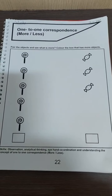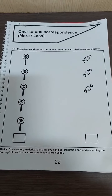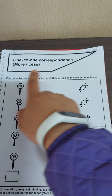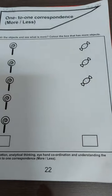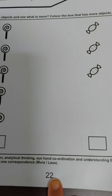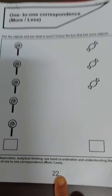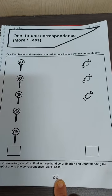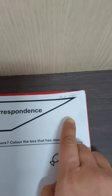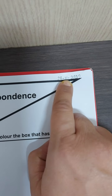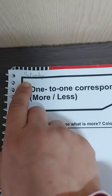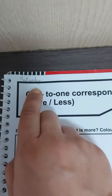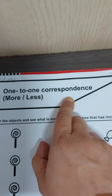Good morning children. As we have all learnt one-to-one correspondence more or less, ask your parents to take out page number 22 of your maths activity book. Ask them to put the date 28-11-2020, day Saturday. The topic is one-to-one correspondence: more or less.